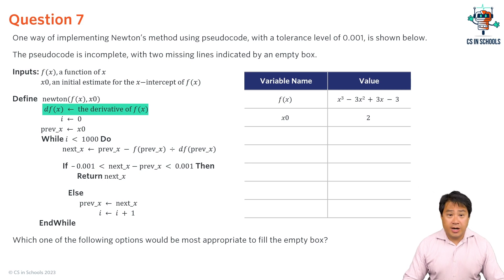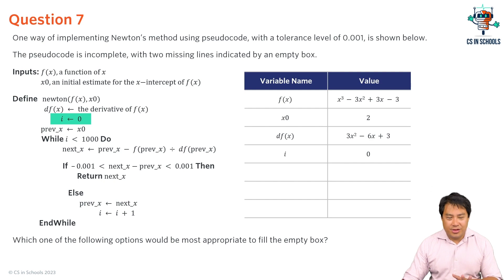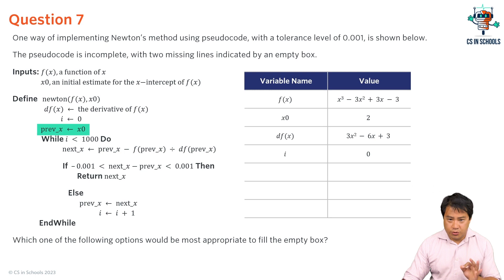The first line finds the derivative of f(x). We manually find the derivative and assign it to the variable df(x): it's 3x² − 6x + 3, using standard rules for differentiating a polynomial. The next line assigns 0 to i. As seen in other questions, i is typically used to track the number of iterations through a loop. So 0 is assigned to i, and x₀, the initial estimate of 2, is assigned to the variable previous_x.